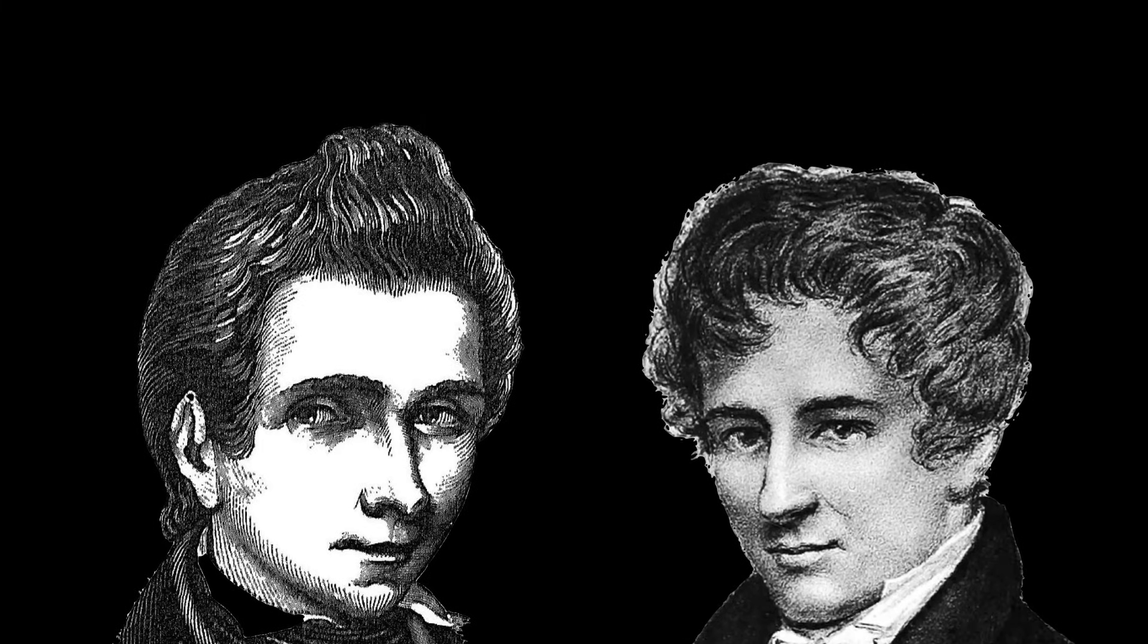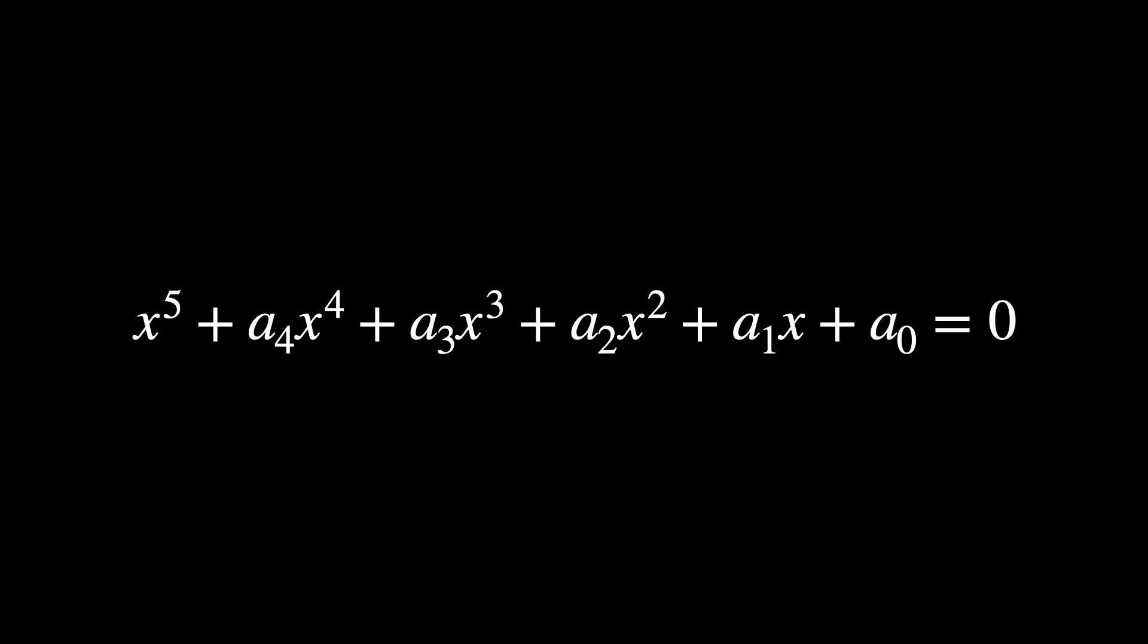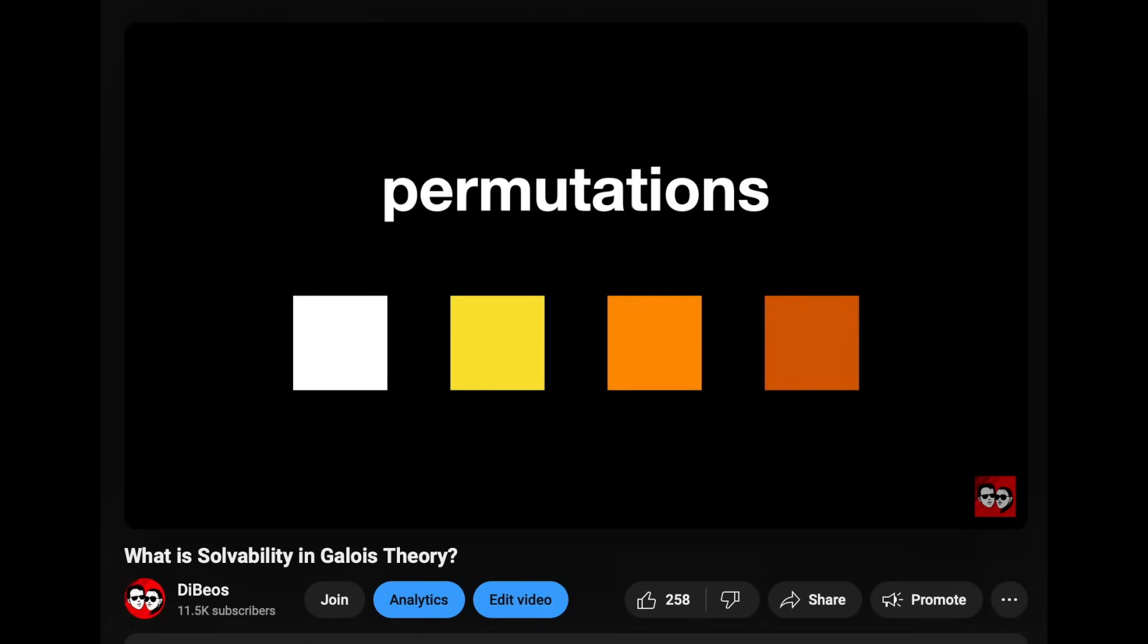However, Abel and later Galois proved that the general quintic, or the degree 5 polynomial, cannot be solved this way. There is no such formula for quintic roots. How to prove that is a whole explanation in itself. And if you're curious, leave a comment below. Although we did make a brief explanation in this video here, which we linked in the description.